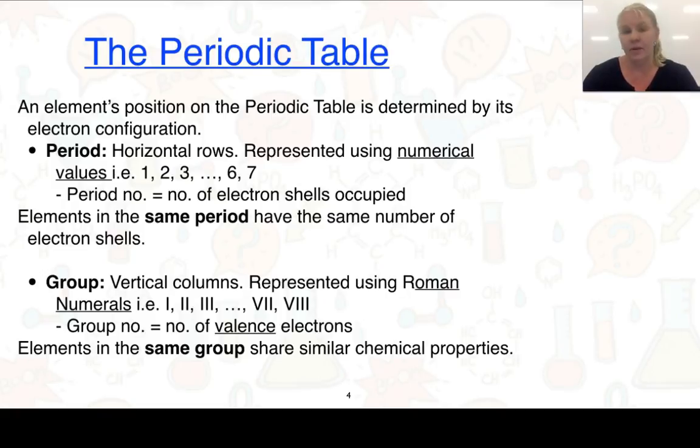Let's have a think about the periodic table. An element's position is determined by its electron configuration. A period is the horizontal rows, represented by numerical values 1, 2, 3, 6, 7, etc. The period number is the number of electron shells that are occupied. Elements in the same period have the same number of electron shells. So if we have elements in period 2, there will be 2 electron shells.